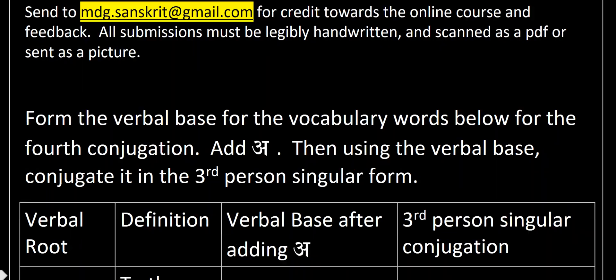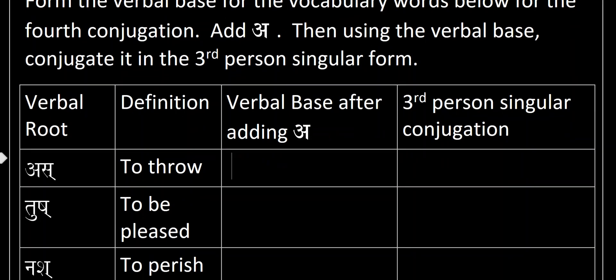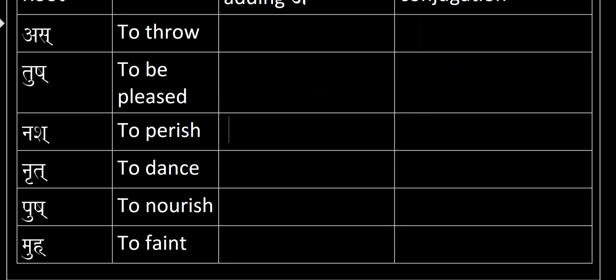What we have to do for this assignment is to form the verbal base for the vocabulary words below for the fourth conjugation — add 'a' — then using the verbal base, conjugate in the third person singular form. So we have 'as' to throw, 'tush' to be pleased, and 'nush' to perish.